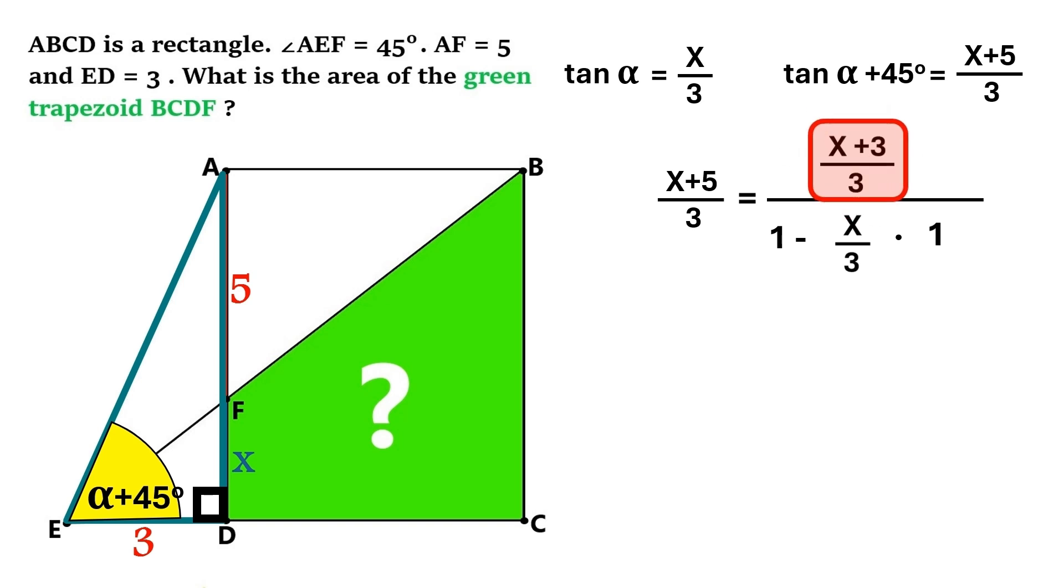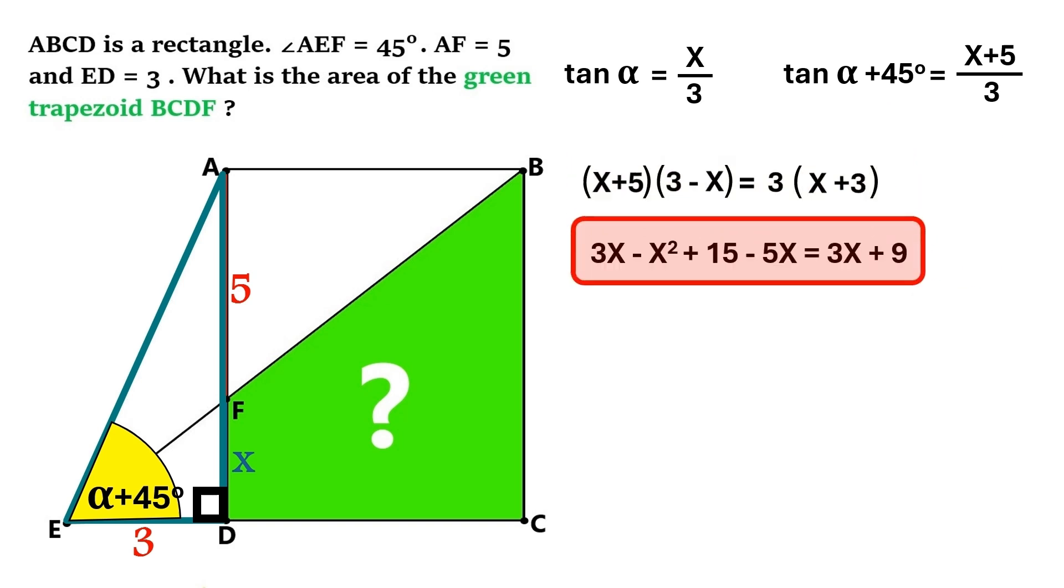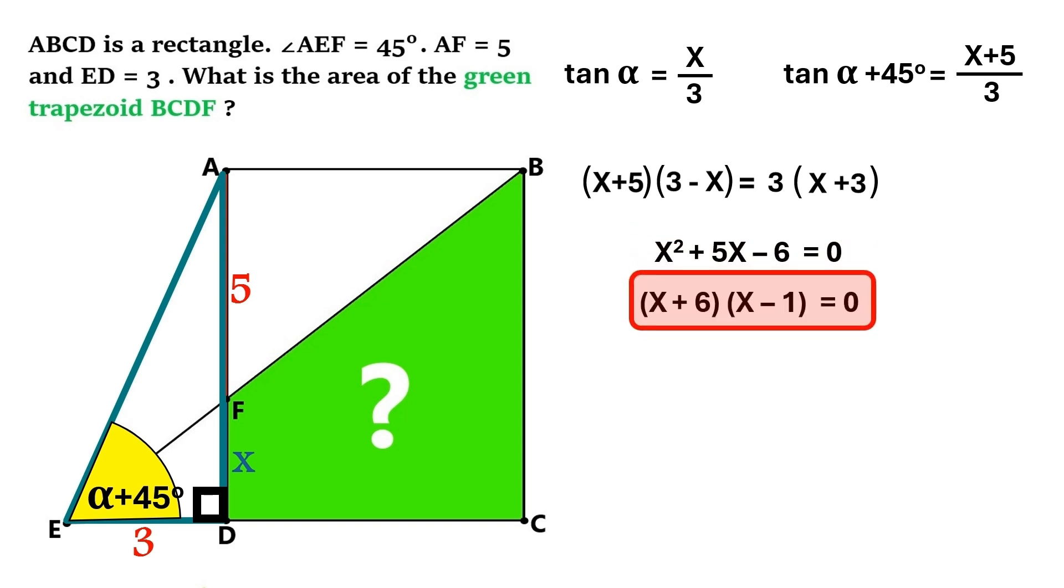Now we've got a super cool equation to work on. And I'm gonna do the math for you. And we end up with this quadratic equation, which factorizes into this. And it turns out x is either minus 6 or 1. And of course, we can't have a minus length. So we are left with x equals 1.